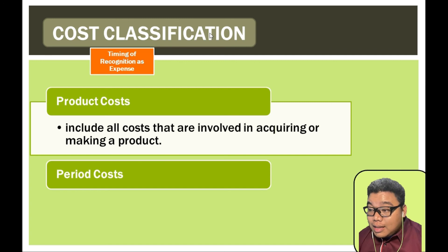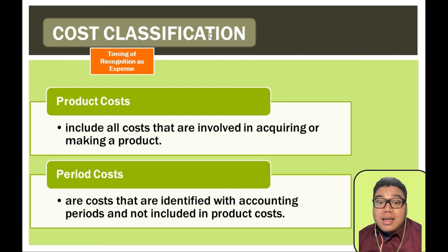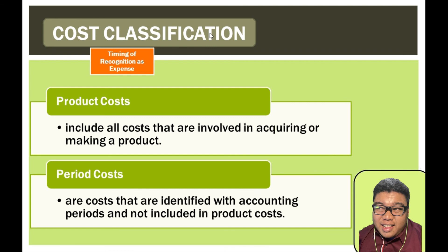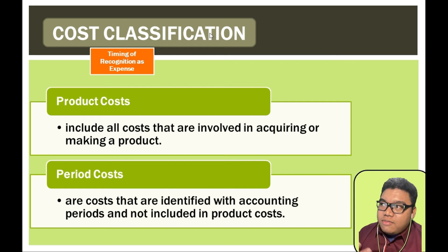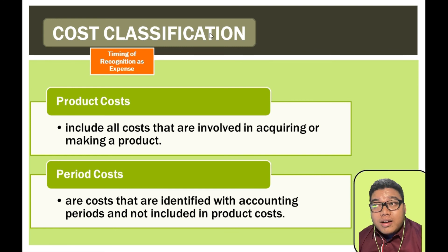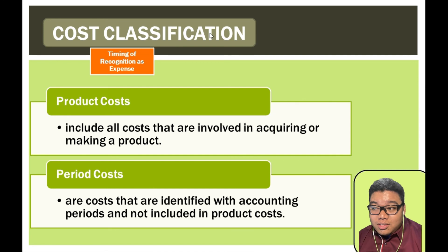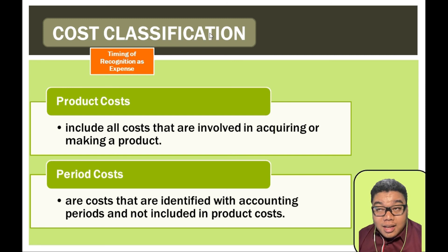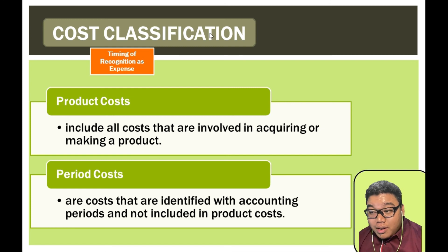Period costs are expensed at the time when they are incurred. In general, these are non-manufacturing costs — for example, the salary of sales people is incurred this month, paid this month, and recognized as an expense this month, because it is not capitalizable as part of the product. Items that can be capitalized as part of the product are called product costs and are expensed when the item is sold. That is the difference in timing of recognition as an expense.